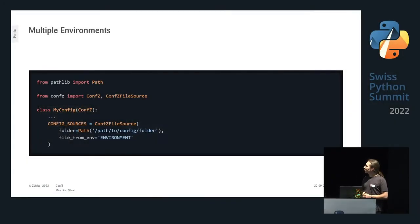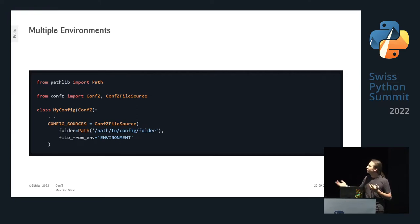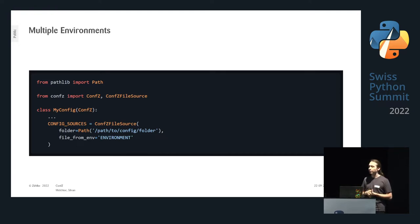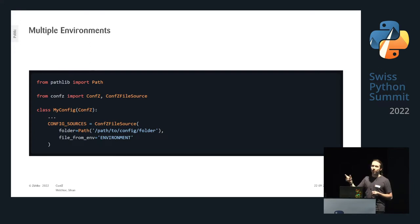For multiple environments — local dev, staging, production — you might have different config files. In ConfSet, instead of defining a single file, you define a folder and tell it where to read the environment name from. In this example it reads the `environment` environment variable and looks for a config file in that folder named after the environment value. That's all you need to go from single-environment to multi-environment setup.